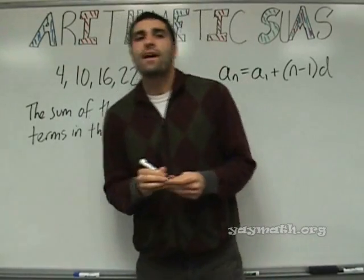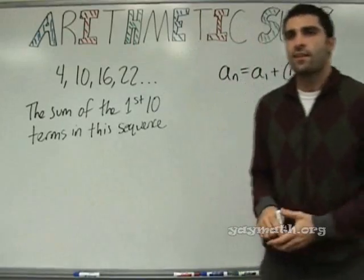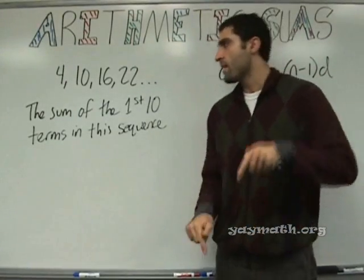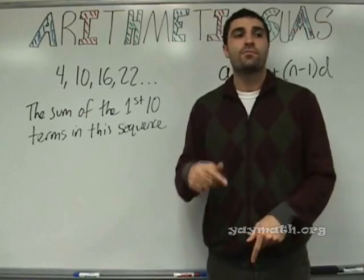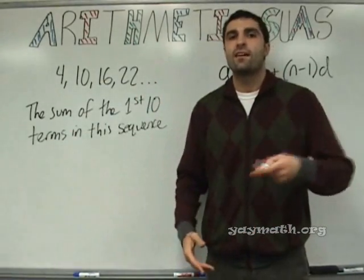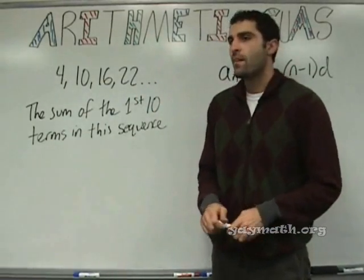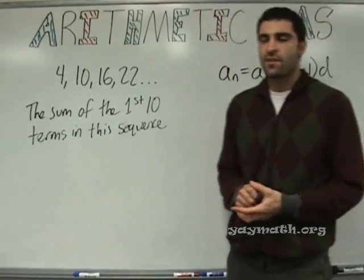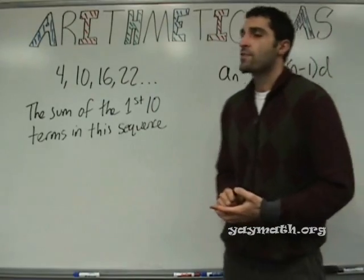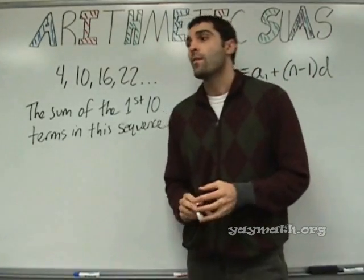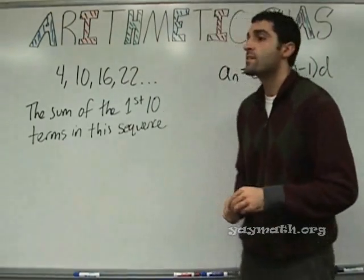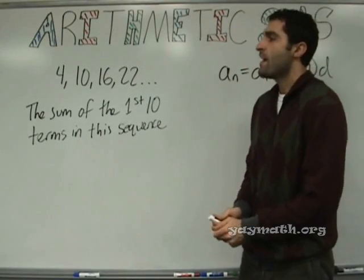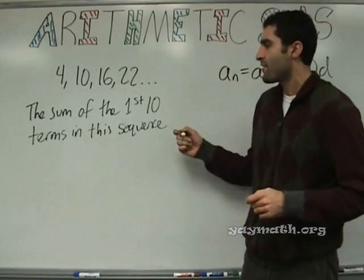So without any formulas, what would we do on a calculator? We'd do 4 plus 10 plus 16 plus 22 plus 28, and on and on until the 10th term. You could do that in less than a minute. But what if I asked for the sum of the first 100 terms? You'd need more time on the calculator, or you need a formula — and there is a formula for that.